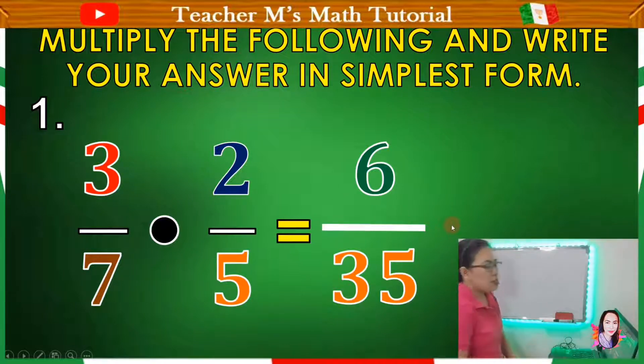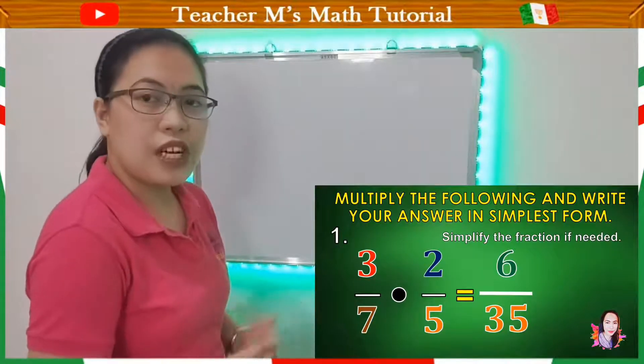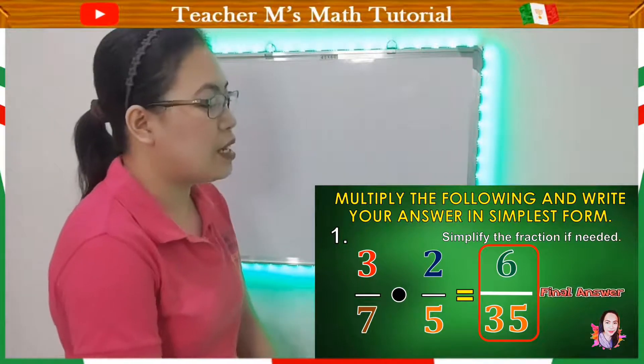The next step is multiply the bottom numbers. Okay, yung bottom or the denominators. 7 times 5 equals 35. And then, we arrive with 6 over 35. Is this the final answer? Simplify the fraction if needed. So do you think it is in its simplest form already? Wala nang common factor ang 6 and 35. So therefore, it will be the final answer.